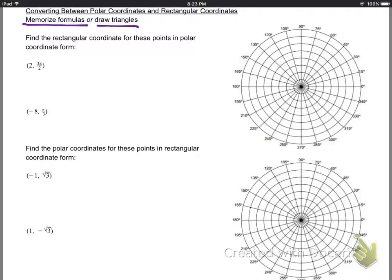So if I give you something in, they call it rectangle or Cartesian coordinates, like the 3, 2 I mentioned earlier, and I want you to change it into polar coordinates, or vice versa, you have two options.